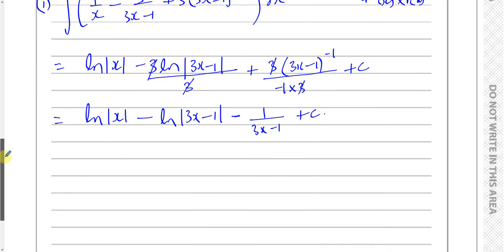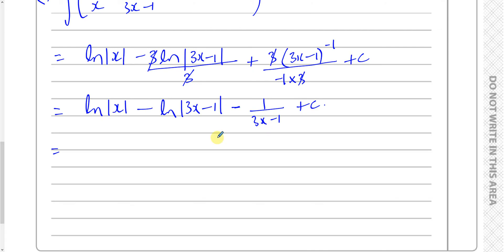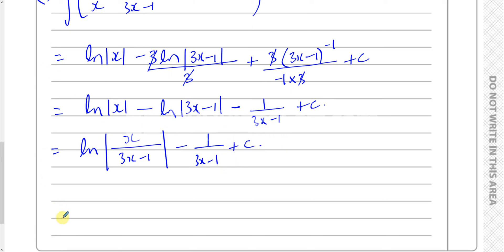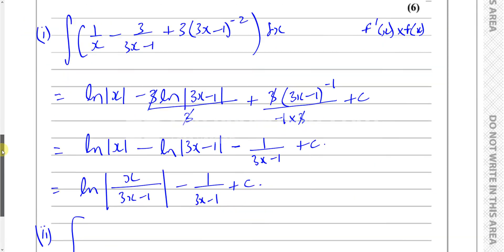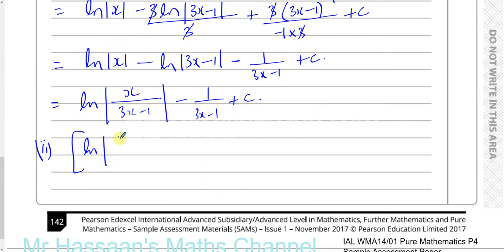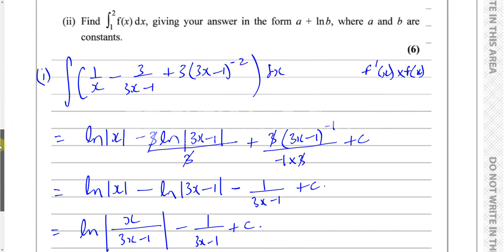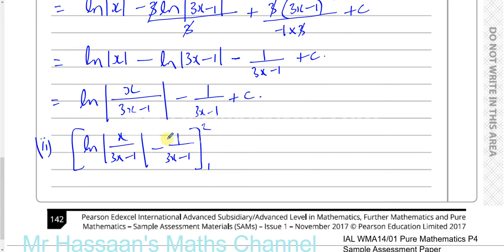We can combine the logarithm terms to write this as ln of the modulus of x over 3x minus 1, minus 1 over 3x minus 1, plus c. Now for part 2, we apply the limits 1 and 2. We don't need to write the plus c since the constants cancel when we subtract the lower limit from the upper limit.